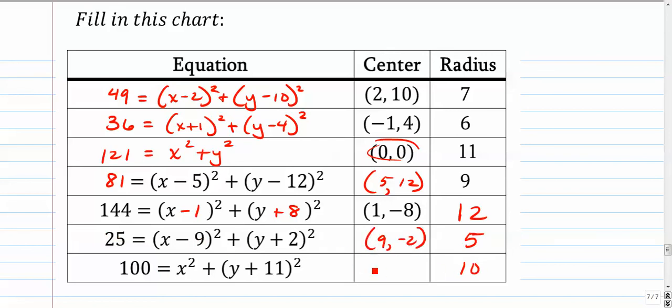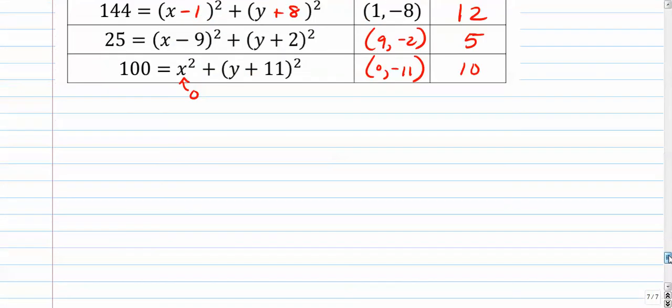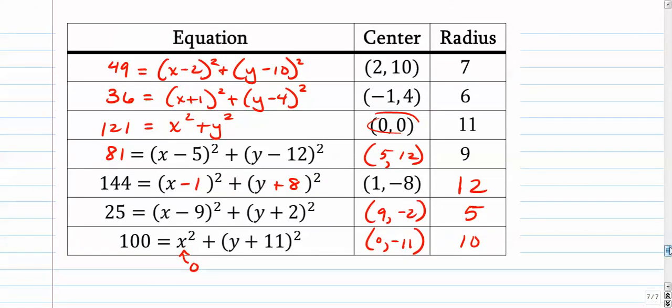The last one, the radius is 10. And the center is 0, negative 11. Whenever you see that alone, that means it's a 0. So there you go. There was a good 9 and a half minutes on circles. And that brings our circle unit to a close.